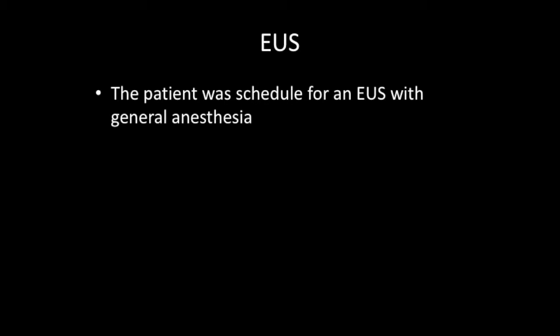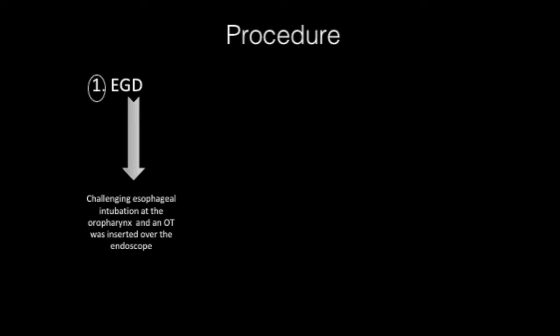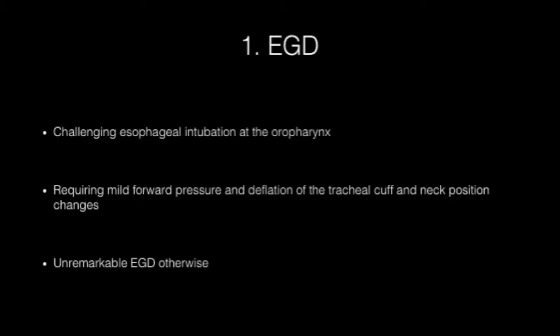The patient was scheduled for an EUS with general anesthesia. In our department, the general diagnostic algorithm used for EUS always starts with a complete evaluation under EGD. This revealed a challenging esophageal intubation at the oropharynx, requiring mild forward pressure, deflation of the tracheal cuff, and neck position changes in order to pass the adult endoscope. Passage of the EUS into the stomach proved impossible.